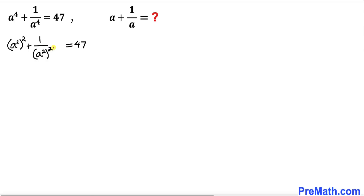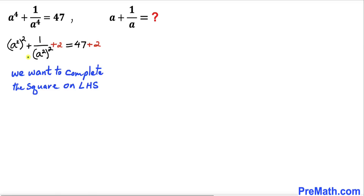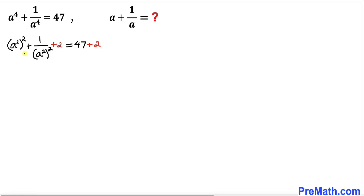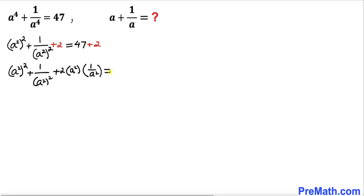Now we are going to manipulate this equation by adding 2 on both sides. We want to complete the square on the left hand side. So I can write the left hand side as a squared whole squared plus 1 divided by a squared whole squared, plus 2 times a squared times 1 divided by a squared. The right hand side is 47 plus 2, which gives us 49. Just keep in mind that multiplying a squared and its reciprocal is simply 1.